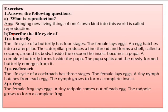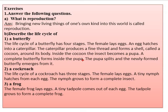Number B question: describe the life cycle of a butterfly. The life cycle of a butterfly has four stages. The female lays eggs. This egg hatches into a caterpillar. The caterpillar produces a fine thread and forms a shell called a cocoon around its body. Inside the cocoon, the insect becomes a pupa, and then a complete butterfly forms inside that pupa. Finally, the pupa splits and the newly formed butterfly emerges from it.